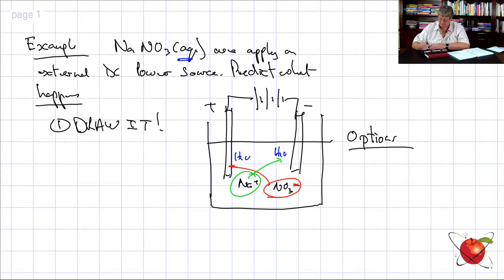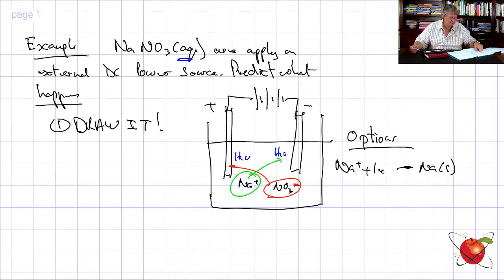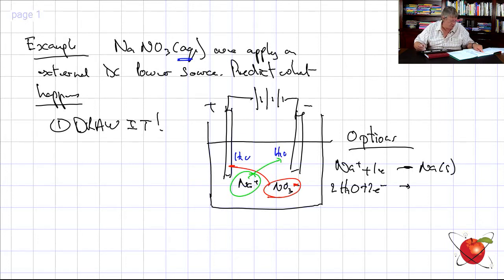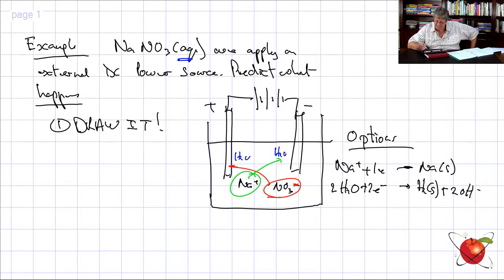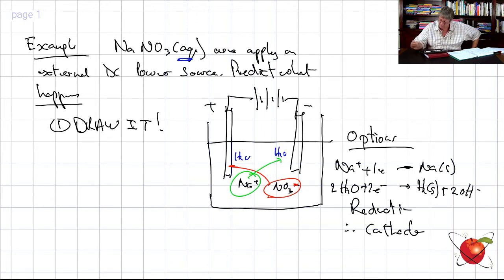On the cathode side, option one: Na+ + e- → Na(s). Option two from the table: 2H2O + 2e- → H2(g) + 2OH-. This involves gain of electrons, therefore this is reduction — therefore cathode. I just use OIL RIG and work it out.